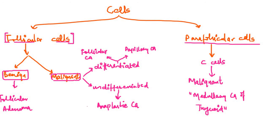These are the basic cell types and the basic types of tumors which can arise from the thyroid gland. In the next video we will take on the papillary carcinoma and the follicular carcinoma of the thyroid. Thank you so much for watching.